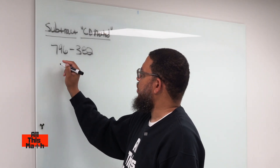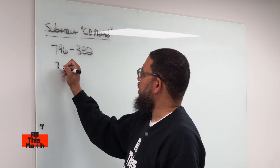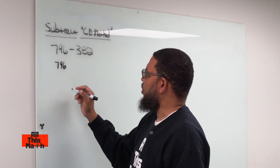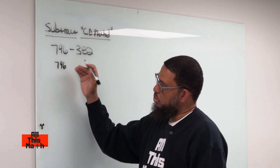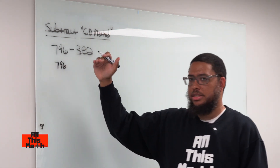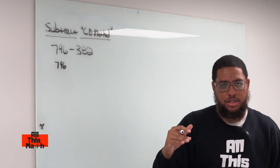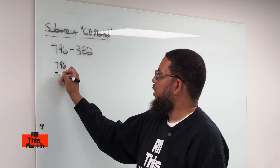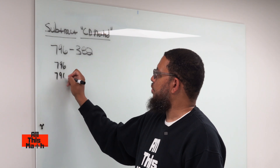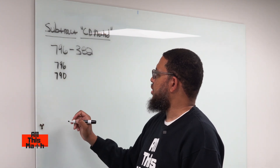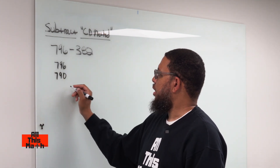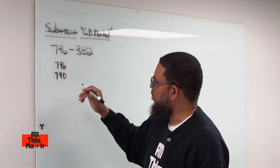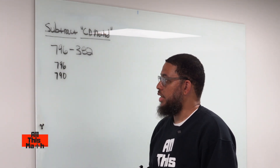We start with 796 and we think of a number that's less than 796 but ends in zero. The closest number less than 796 that ends in zero is 790. So we're going to have 796 and 790.